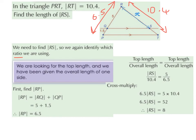We could have written it the other way around, with 5 over 6.5 on the left-hand side and RS over 10.4 on the right-hand side — either way will work because we're going to cross multiply and solve. So cross multiplying gives RS multiplied by 6.5, which is 6.5 RS, equals 10.4 multiplied by 5. And 5 times 10.4 is 52. Then 52 divided by 6.5 gives us 8. So the length of RS is going to be 8.